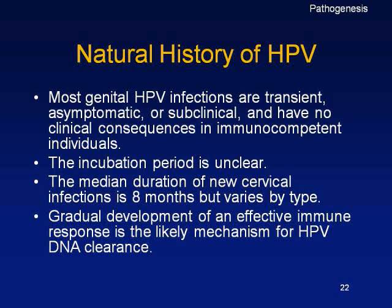The immune mechanism involves DNA clearance — within 2 years, most scientists believe the immune system should take care of it by clearing the viral DNA. Because HPV is a DNA virus, you have to clear the DNA so the virus is eliminated. That's an effective immune mechanism.